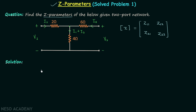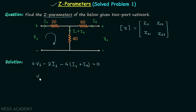In step number two we will develop the input KVL equation and the output KVL equation. For the input KVL equation we have: V1 minus 2I1 minus 4(I1 + I2) = 0. From here we get V1 equal to 6I1 plus 4I2. Let's call this equation number one.